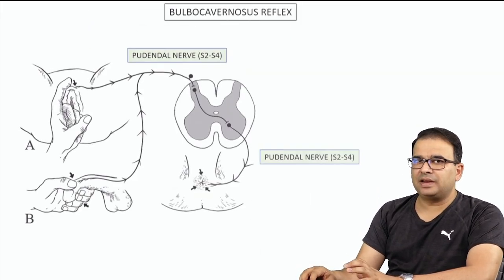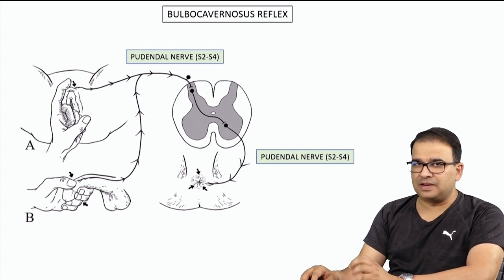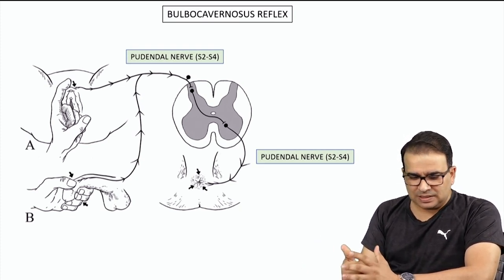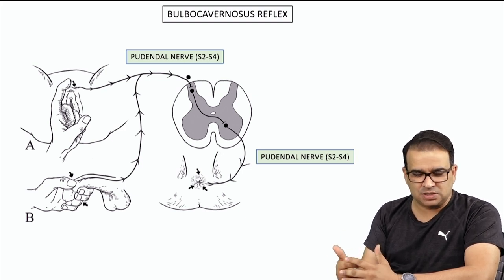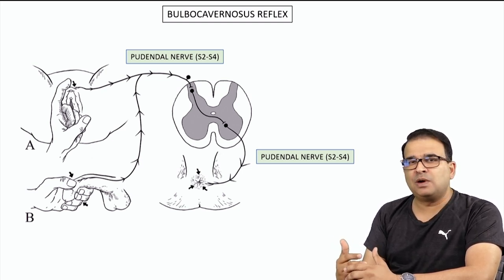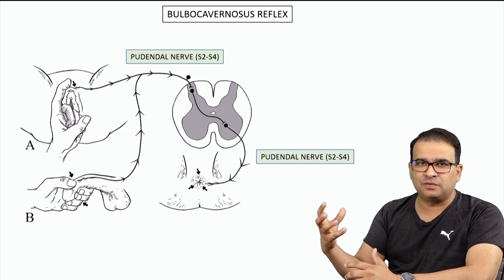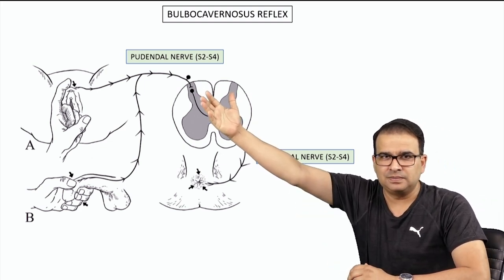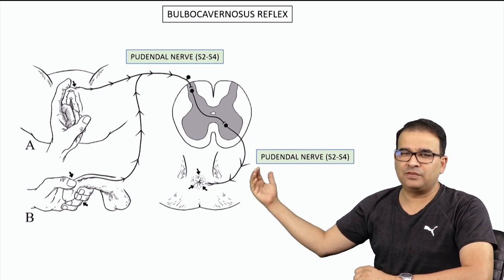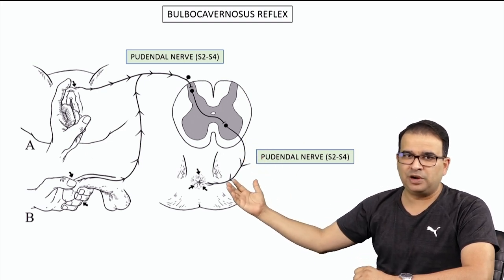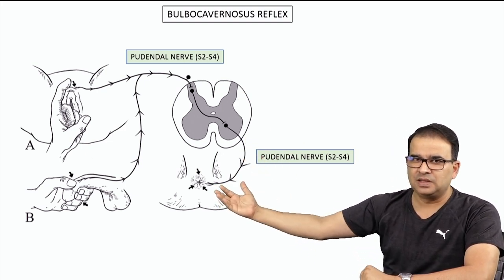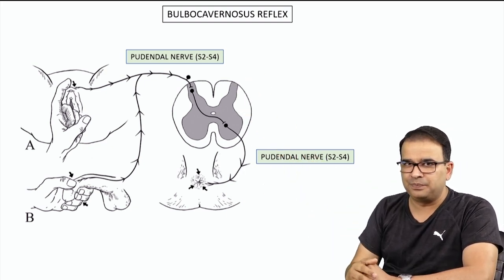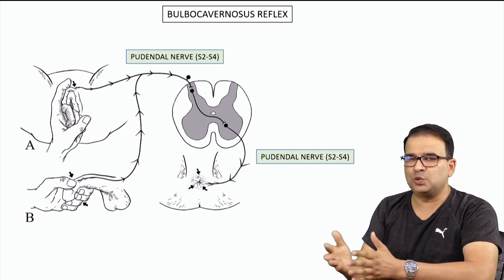The next thing to understand is the bulbocavernous reflex, also called the bulbospongiosus reflex. This is a well-known somatic reflex used to gain information about the state of the sacral region of the spinal cord. The afferent and efferent of this reflex both travel through the pudendal nerve, which supplies the external anal sphincter, with a root value of S2, S3, and S4.